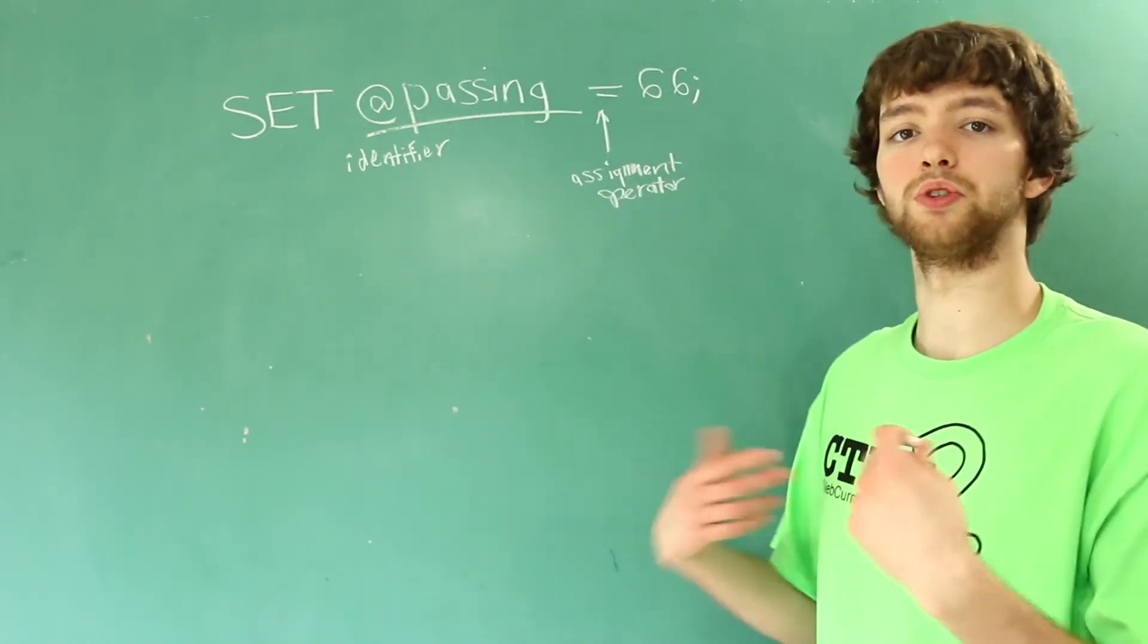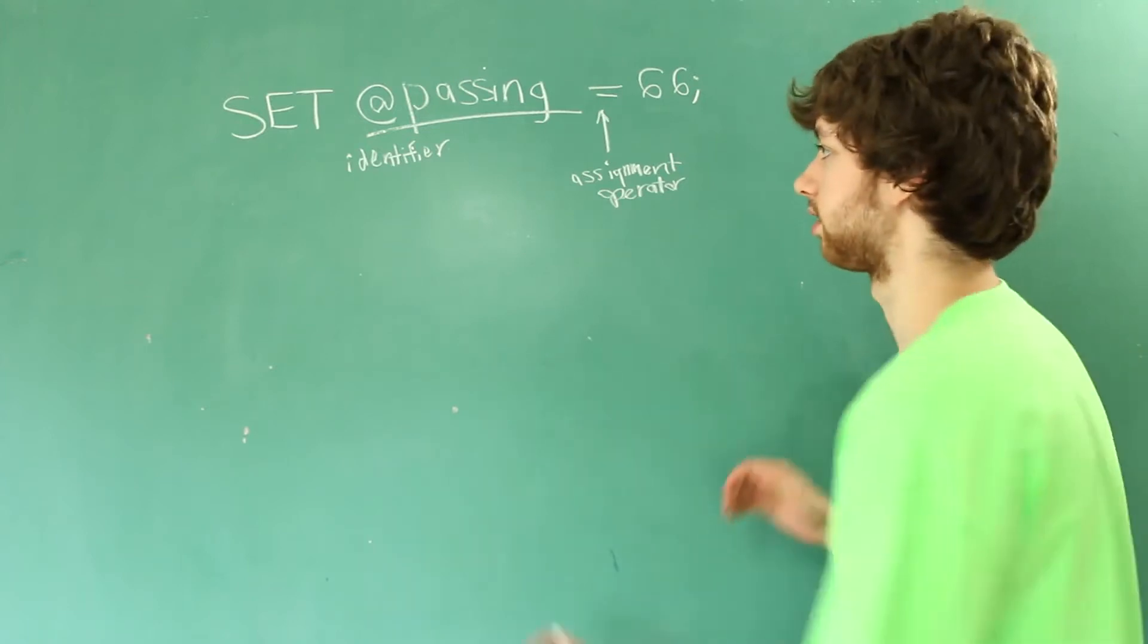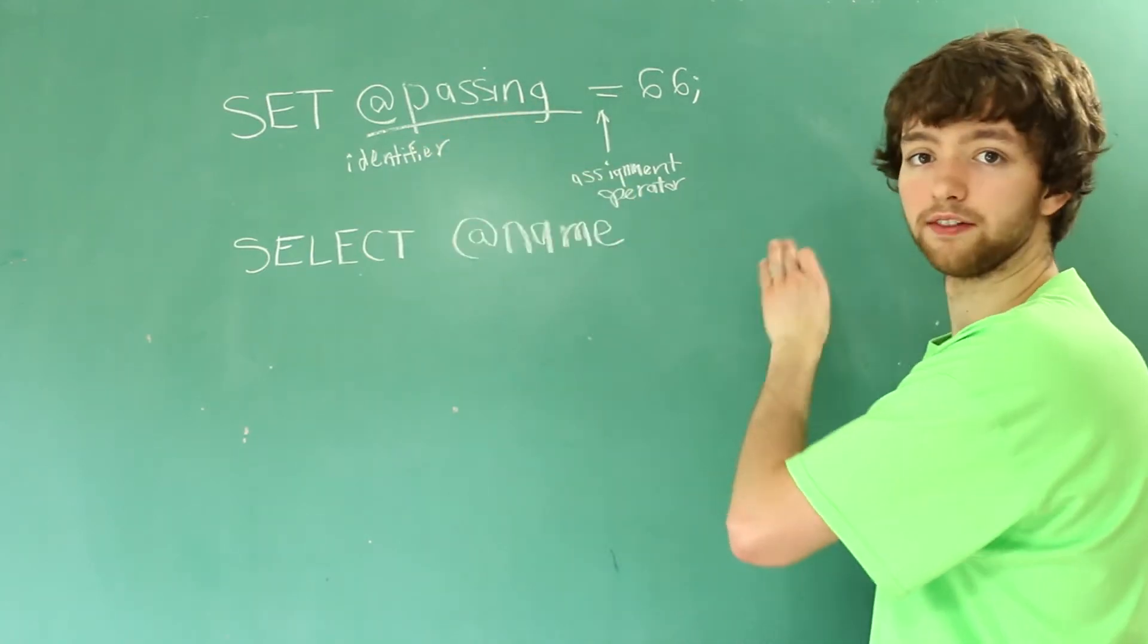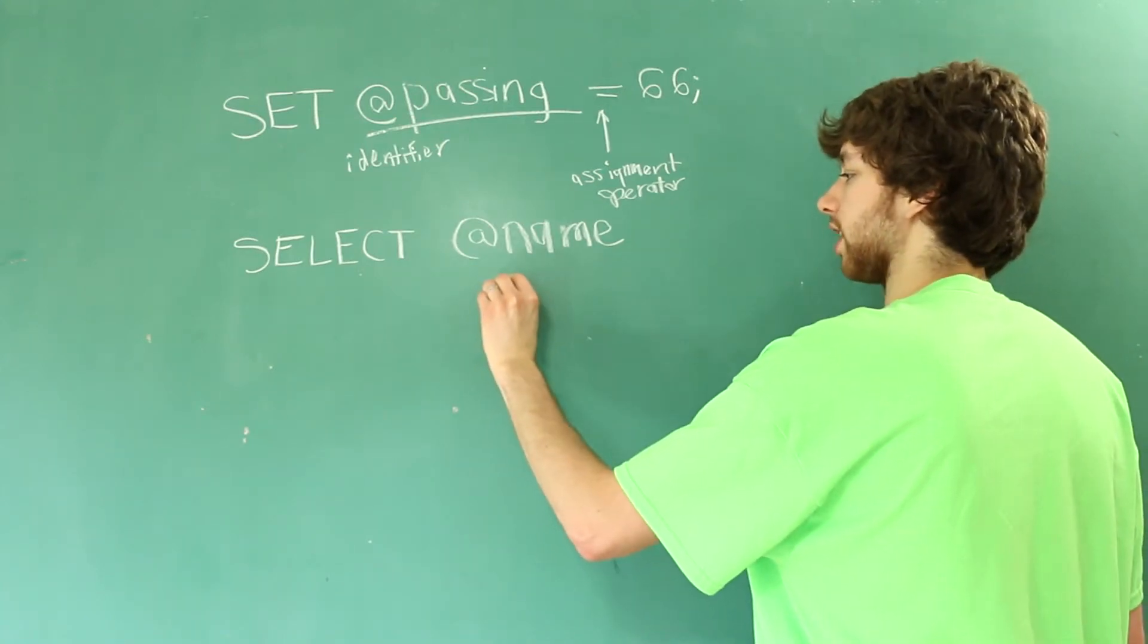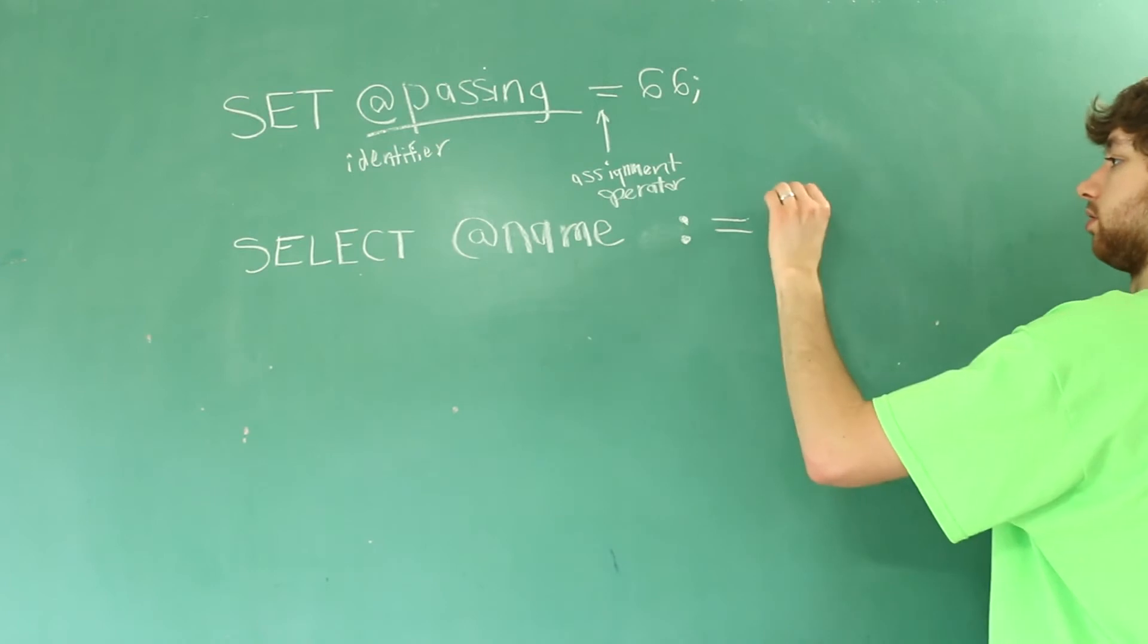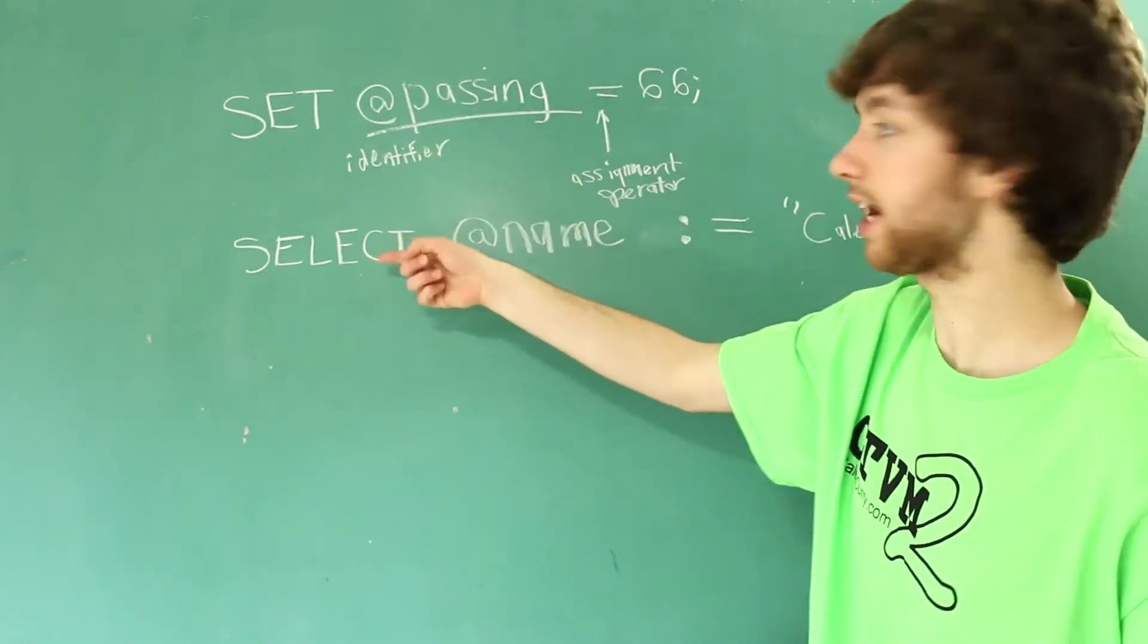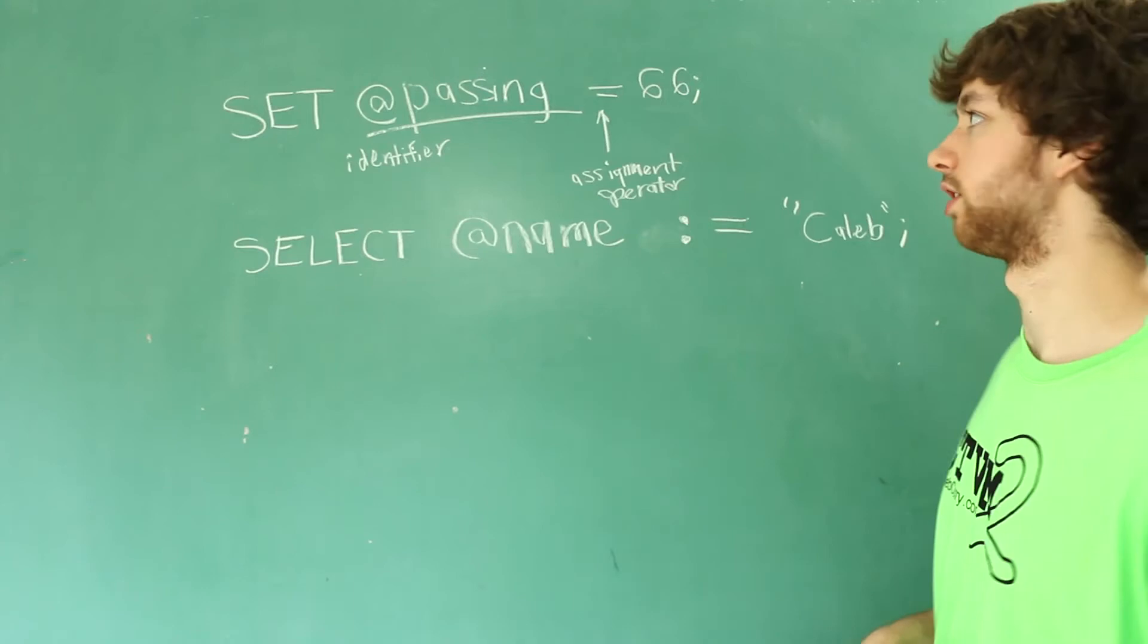The new way to create a variable is within a select statement. The very first thing you need to do is replace set with select, then you use the identifier just the same, and then you need to assign it a value. In this situation the assignment operator looks a little bit different - you are going to use a colon and then an equal sign. Once you have that you can give it the value. You can also see here you can use different data types with your variables. So to summarize, the only two differences is this change in keyword from set to select and then this change in the assignment operator to a colon equals.